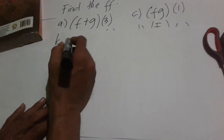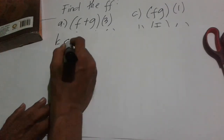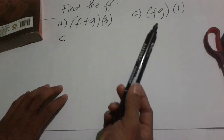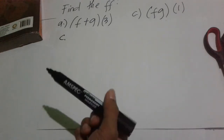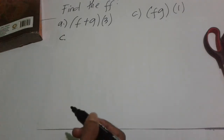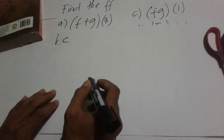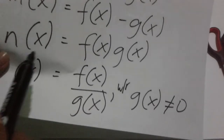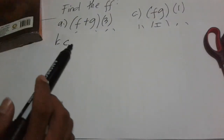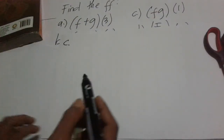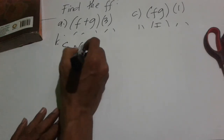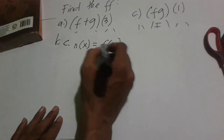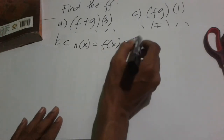Next, for letter (c), we have (f·g)(1), where the value of x is 1. f·g implies multiplication, so we use n(x) = f(x) · g(x). Substituting: f(x) = 5x - 4 and g(x) = 2x - x².